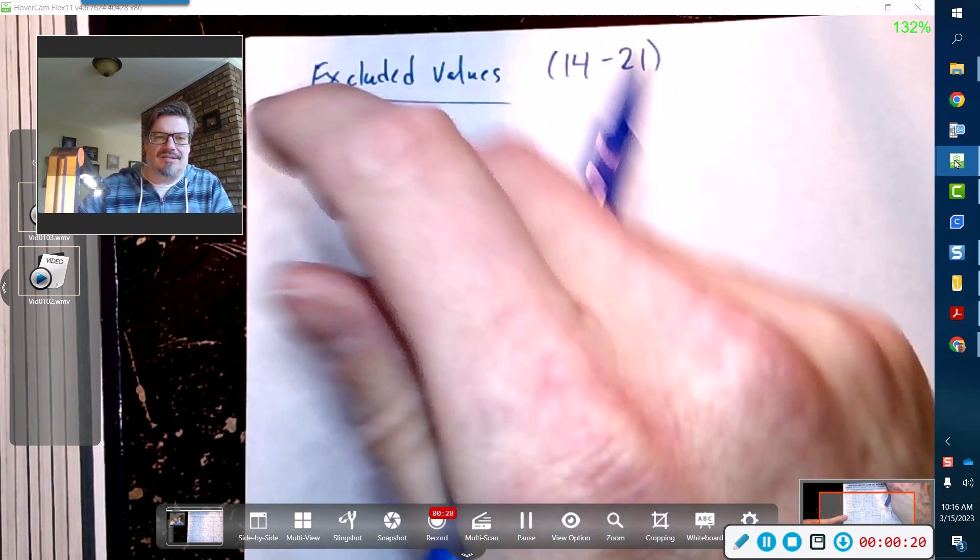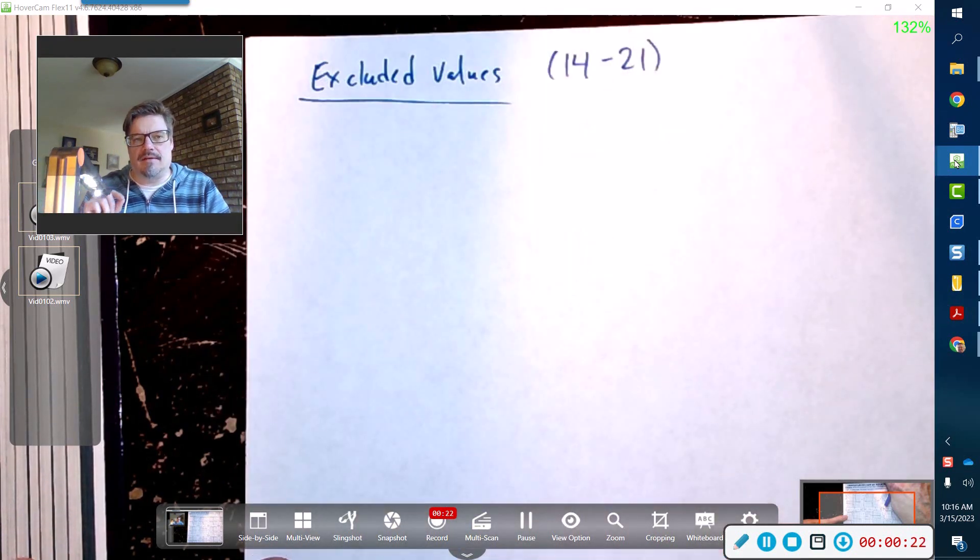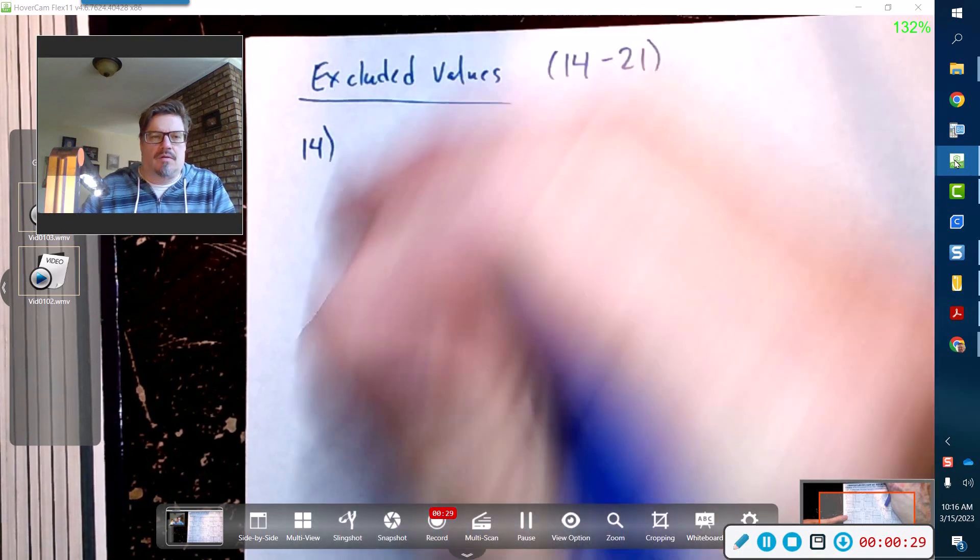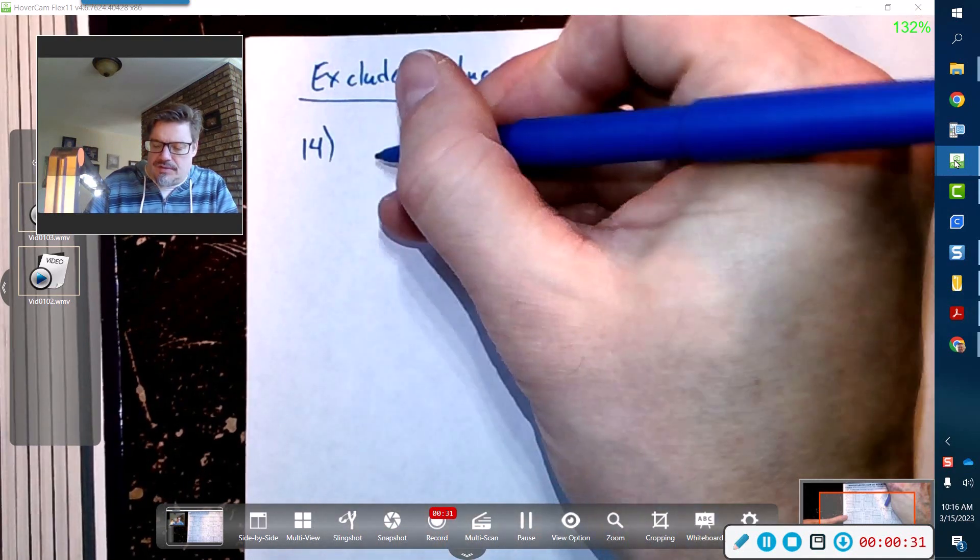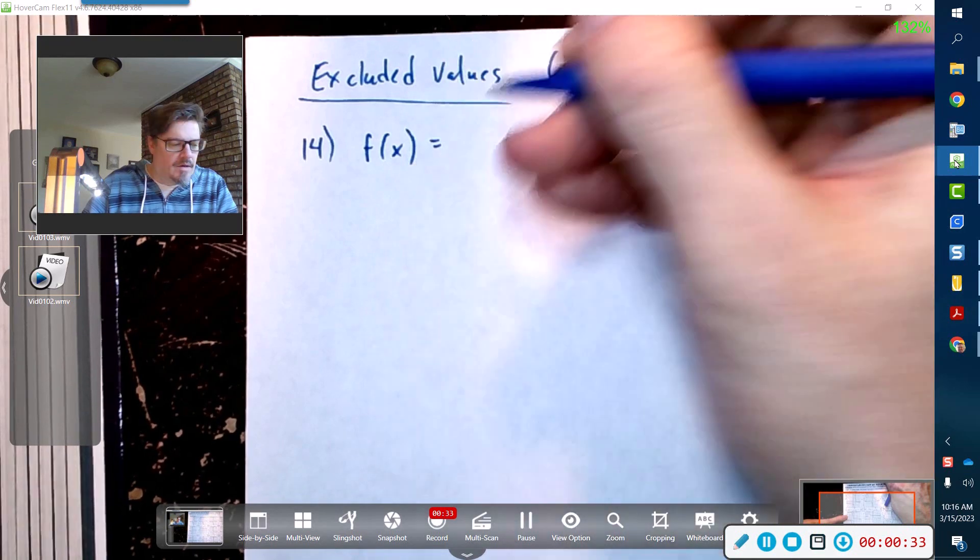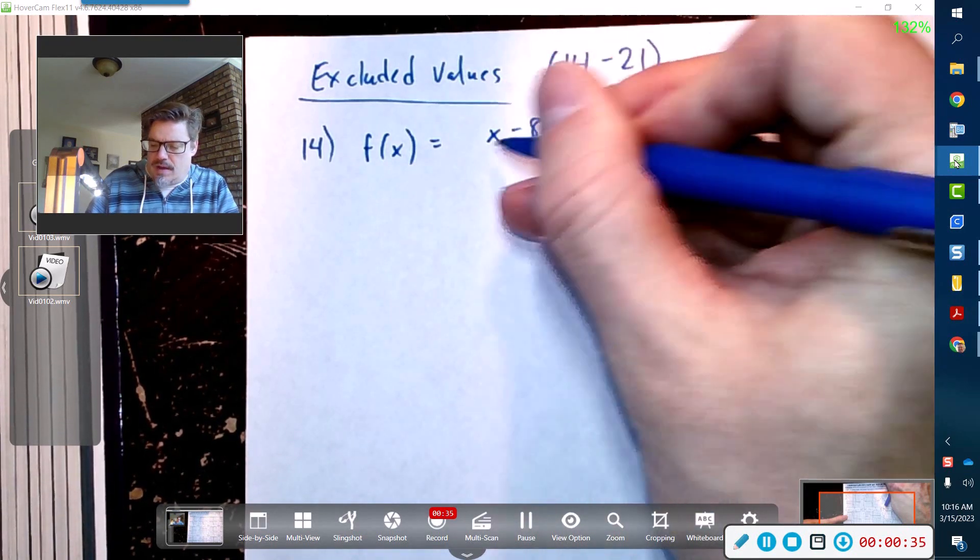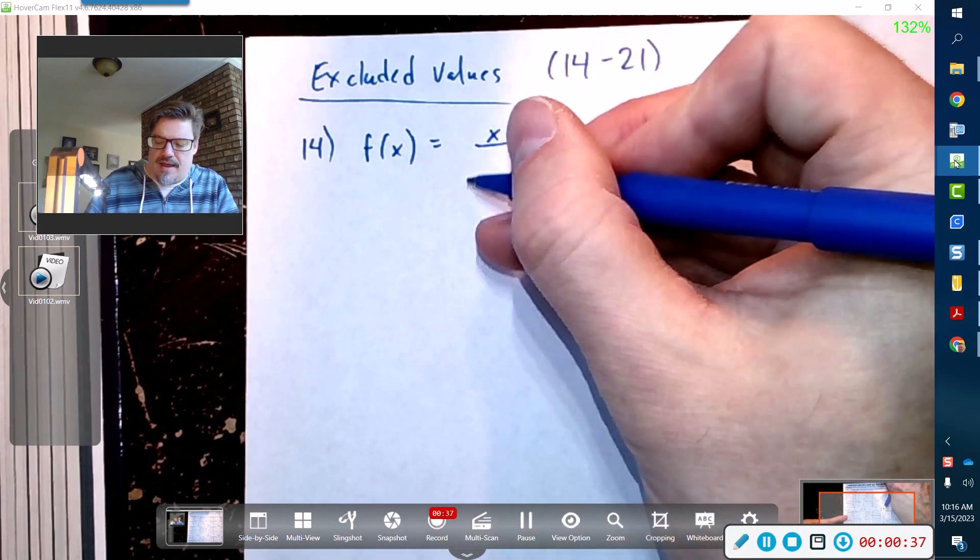So here's what we're going to do: we're just going to look at what are excluded values, what your x cannot be. That's kind of a new thing. We're used to just having equations where we solve for x, solve for x, solve for x.